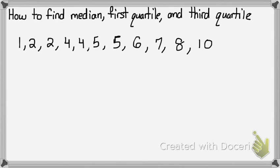The first thing you want to make sure is that your data set is in order from least to greatest. And then the first thing you're going to find is your median.